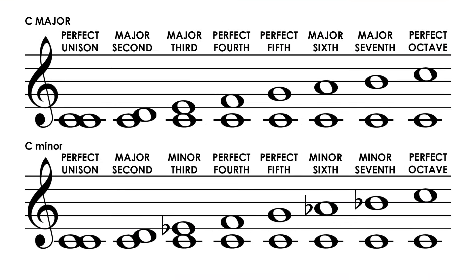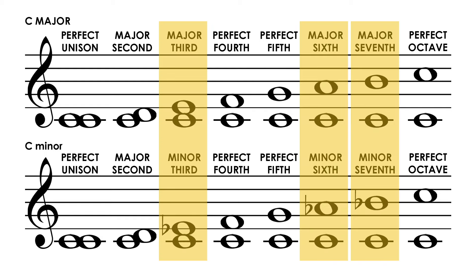If we compare the intervals of the major and minor scales, we can see that the third, sixth, and seventh are the only intervals that change type from major to minor. The rest of the intervals stay the same.